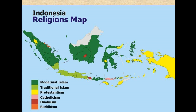And of course, there are unique cultural aspects to this region. We see on this religions map that there's both modern and traditional Islam practice, but also Protestantism, Catholicism, Hinduism, and Buddhism.